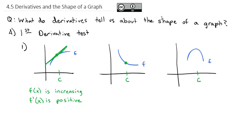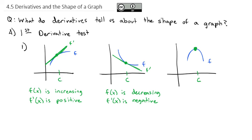Similarly, at point c on the curve that's decreasing or going down, you'll see that the slope of the tangent line is going downhill — it is negative. So we'll say that when f(x) is decreasing, f'(x) is negative. At the peak on the third graph, it's neither increasing nor decreasing, and the tangent line is completely flat at that point. So if f(x) is neither increasing nor decreasing, then f'(x) is 0.